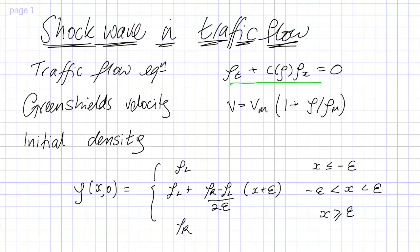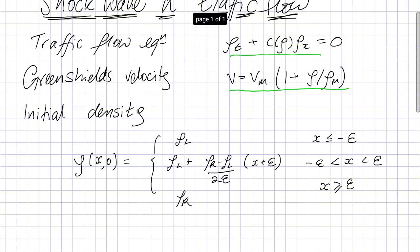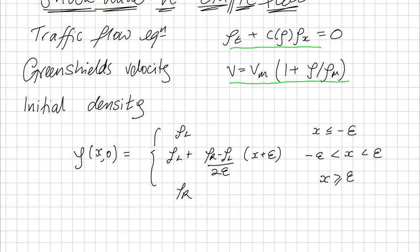This is a first order, non-linear wave equation. We're going to be using the Green Shields law for the velocity, this linear relationship here. And then finally, I'm looking at initial density, which is a piecewise linear function.